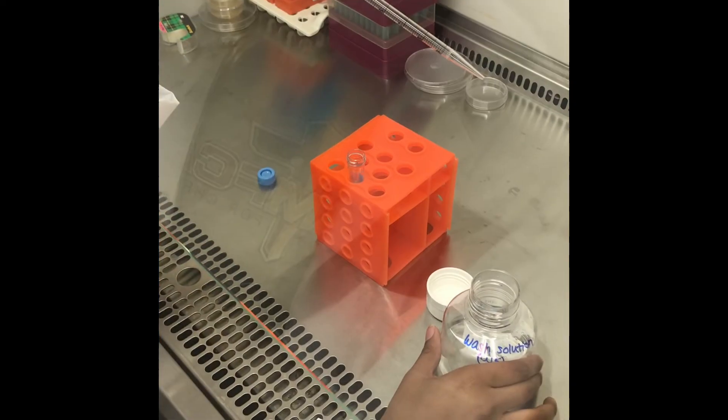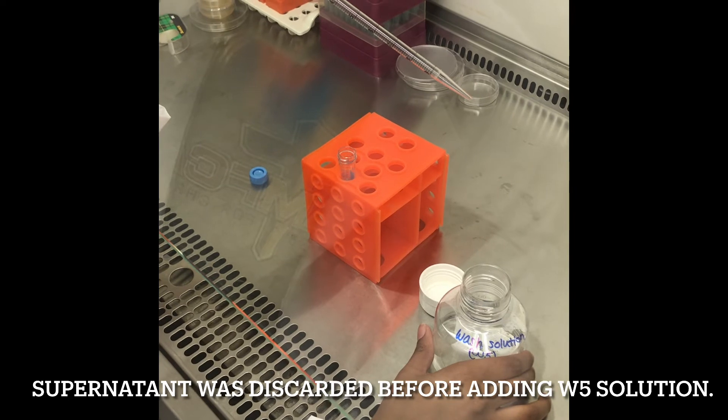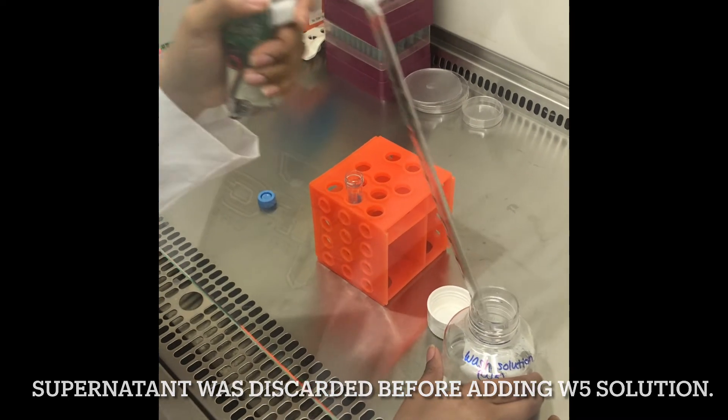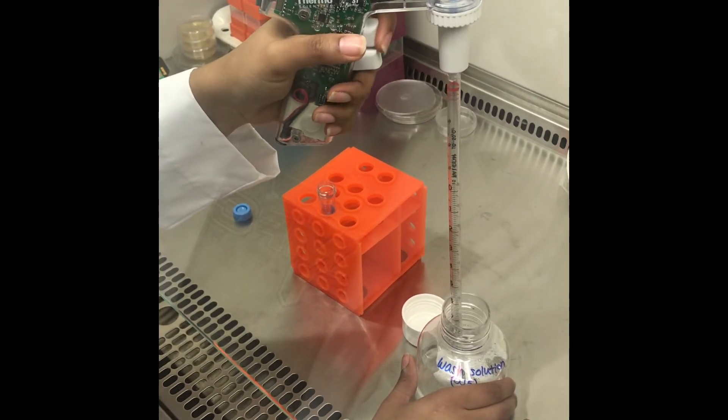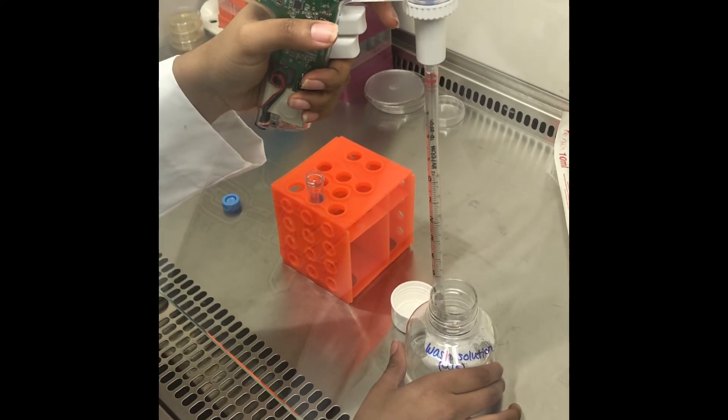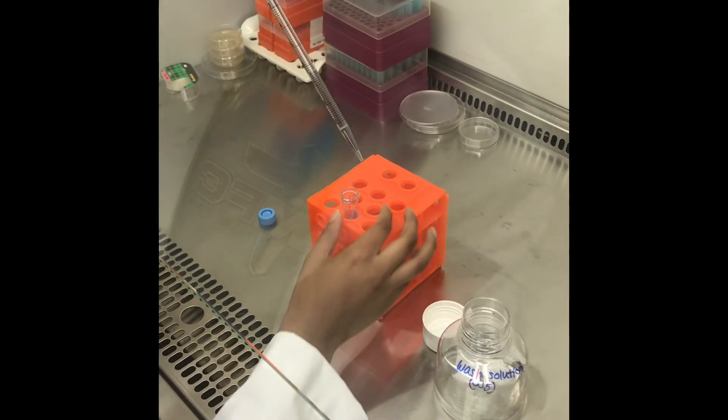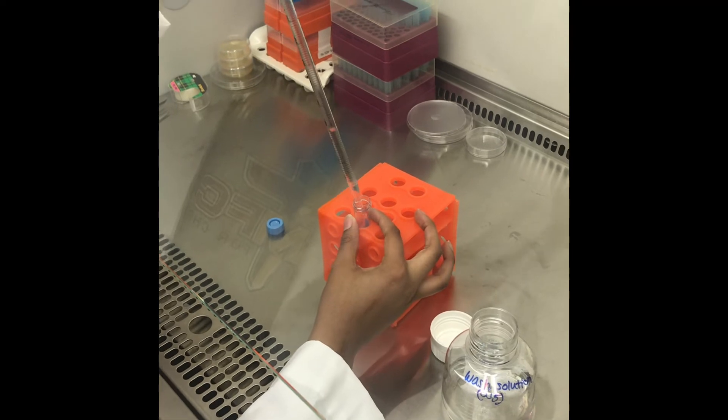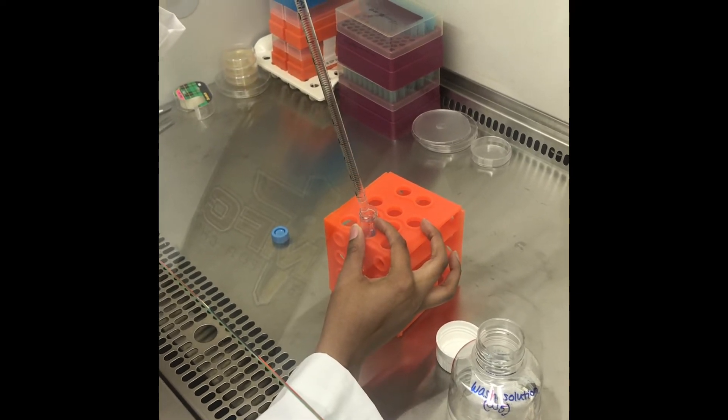So now we're going to take our W5 wash solution and wash our protoplasts. We're taking approximately three milliliters.